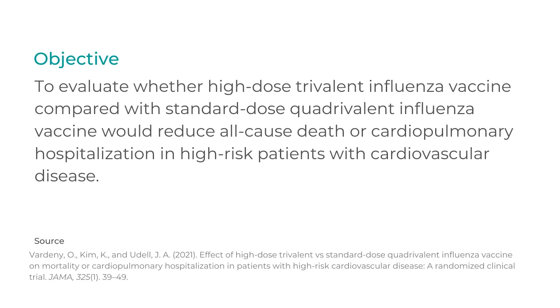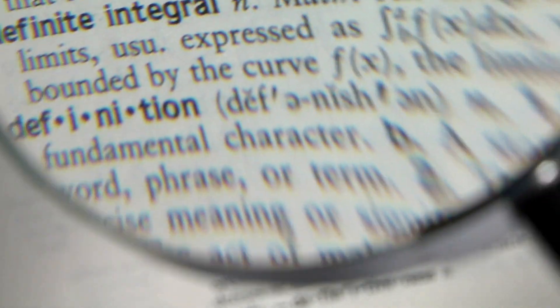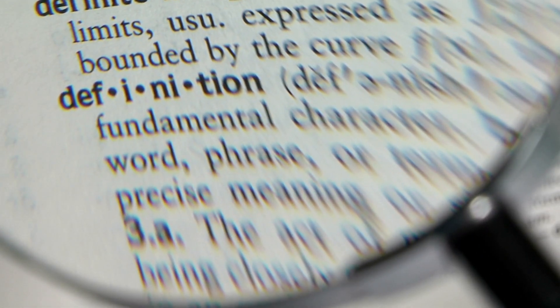Next, we have the Objective section. This is where you state what you actually intend to examine. Notice that it starts with 'to evaluate' because the AMA strongly advises abstract writers to avoid phraseology like 'this study will evaluate x' or 'we seek to determine whether y.' Instead, go right into the objective with phrasing like 'to evaluate x' or 'to determine y.' It's important to be concise. Notice how this is written to other researchers — several terms are not defined, as abstracts are generally not places to define terms, since this takes up valuable space that could be better spent getting directly to the point.